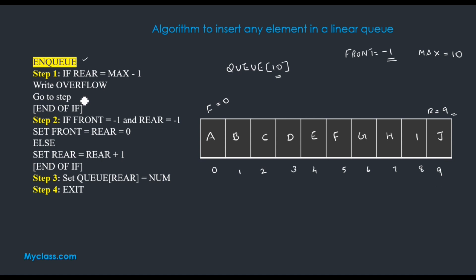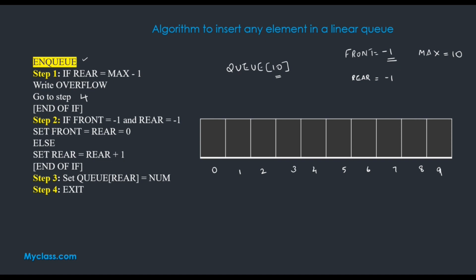If the overflow condition is true, we go to step 4 — that is the end of that structure. Otherwise we are checking one more condition. If there is no overflow, we want to insert the element into the array. One special case is when the queue is empty: if front equals minus 1 and rear equals minus 1, nothing is in the queue. Before insertion we want to set front equal to 0 and rear equal to 0, because we are inserting our new element as the very first element.